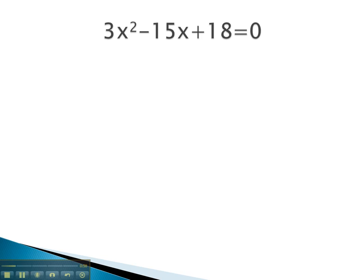First thing we want to do is separate the variables from the number, so we will subtract 18, because it has no variables on it. We now have 3x squared, minus 15x, equals negative 18.